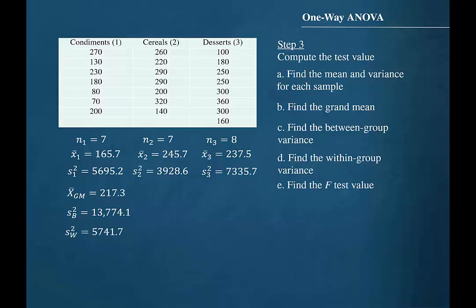Step E is to find the test value. The F-test value is found by dividing the between-group variance by the within-group variance. So we will divide 13,774.1 by 5741.7. Our F-test value then will be 2.40.